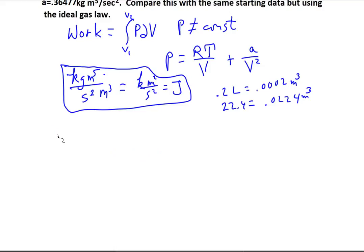Now we just need to plug the expression for pressure into the integral and see what we get. So we'll write work is equal to V1 to V2 of, this is going to be RT over V plus A over V squared, dV.